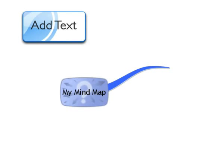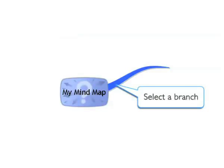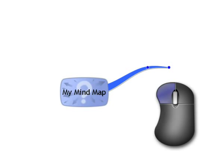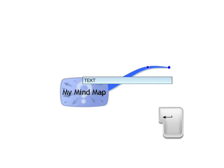To add text to your branches, you must make sure that the branch is selected. You can tell if it's active if the blue control points on your branch are visible. If it isn't, simply click on the branch, then just type away. Hit Enter when you have added your idea and your text will show up on your branch.